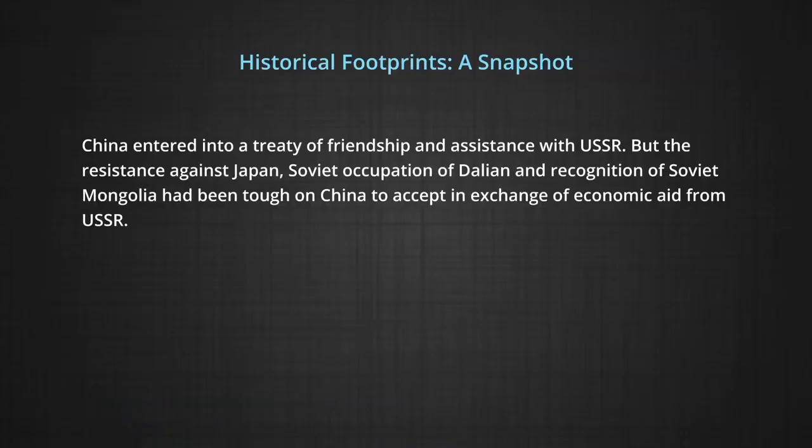Relations between People's Republic of China and the United States remained in a moderate stance due to the hostile political climate. China worked hard at eliminating western influence on its people, thereby restoring its culture. China entered into a treaty of friendship and assistance with the USSR, but resistance against Japan, Soviet occupation of Dalian, and recognition of Soviet Mongolia had been tough on China to accept.